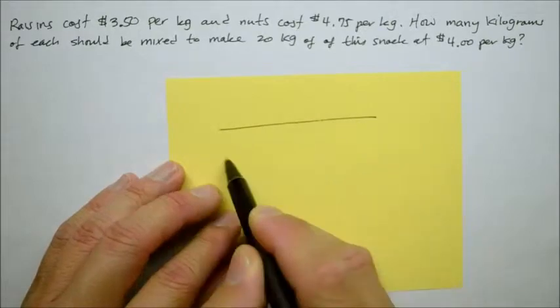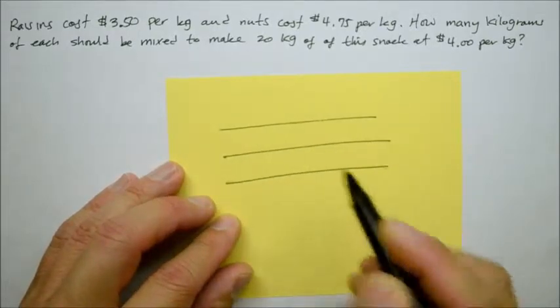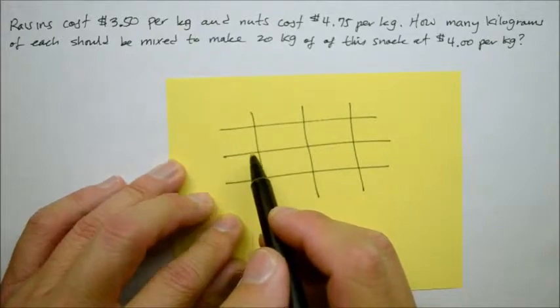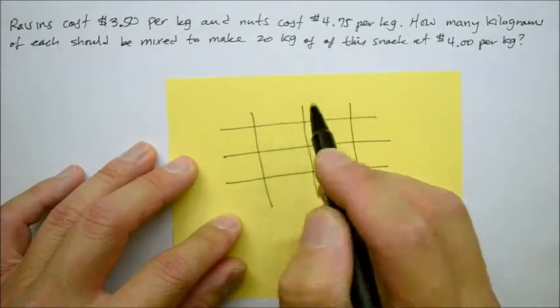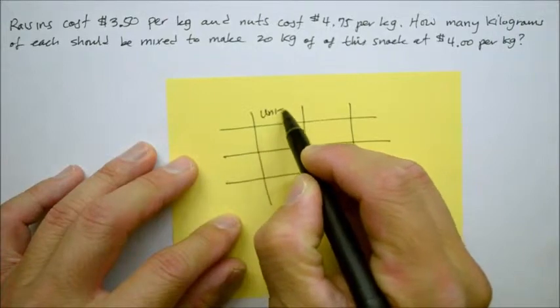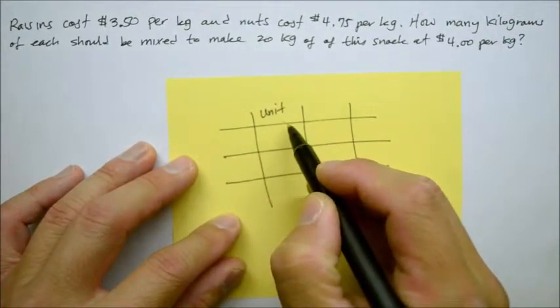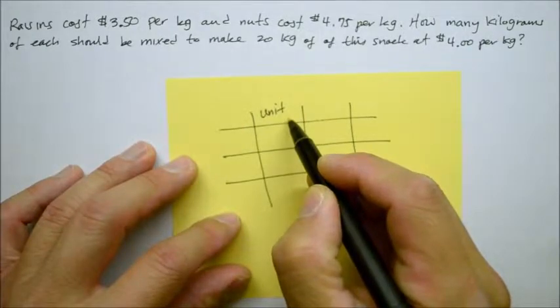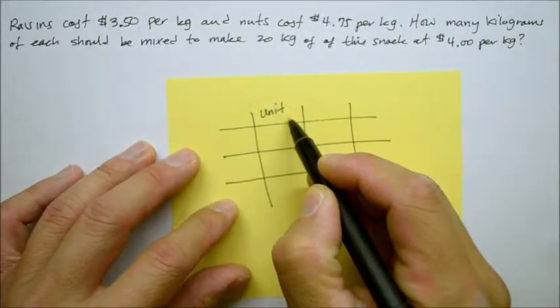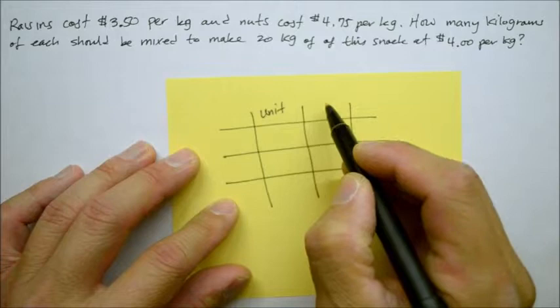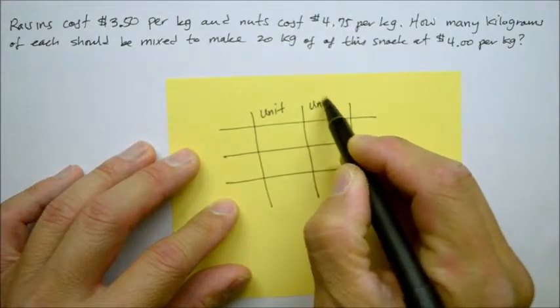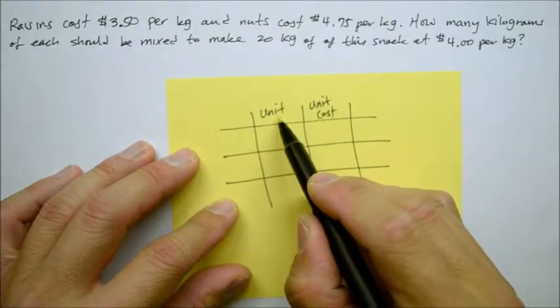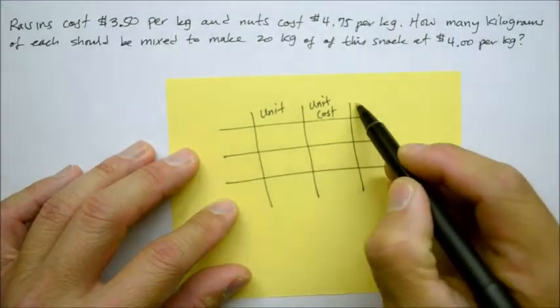You draw a little grid like the way I'm going to show you right now. The top, starting with the second little box over here, we call this the unit. The unit can be volumes, the number, amount of things, how heavy, depends on whatever the unit is. Then associated with that unit is a cost, the unit cost. And finally, if you multiply the unit and the unit cost together, you will get the total amount.